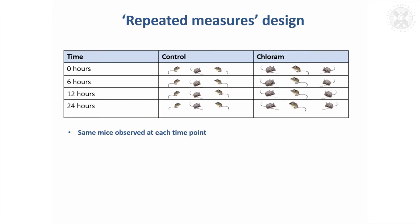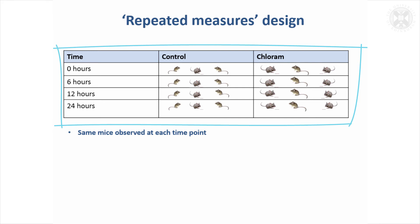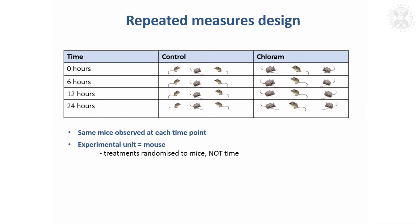Another design that's frequently appropriate is what in statistical terms we call a repeated measures design, where you want to measure something repeatedly over time and see how the effect of an intervention changes over time. For example, measuring mice again — we might be measuring the same thing on the same mouse but at different time points. There's potential for correlation in the observations on the same mice, and that needs to be taken into account.